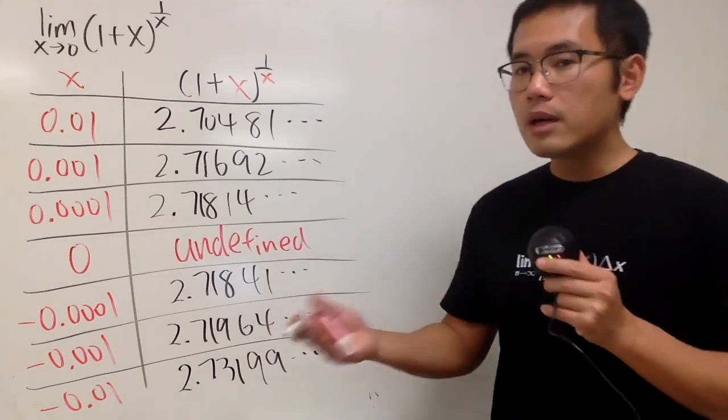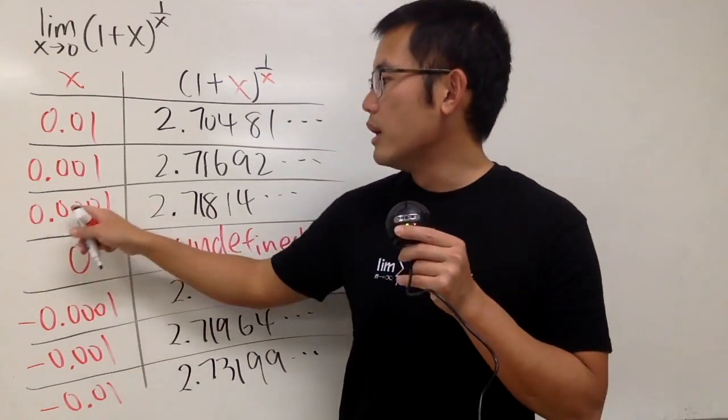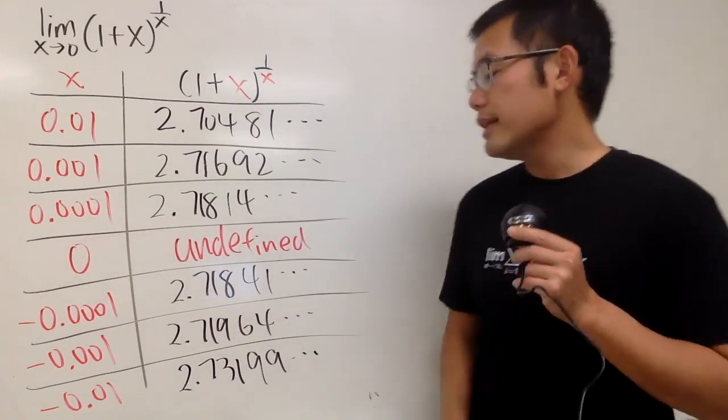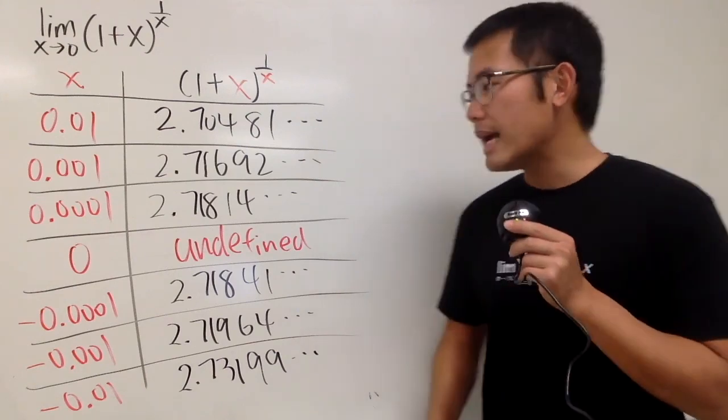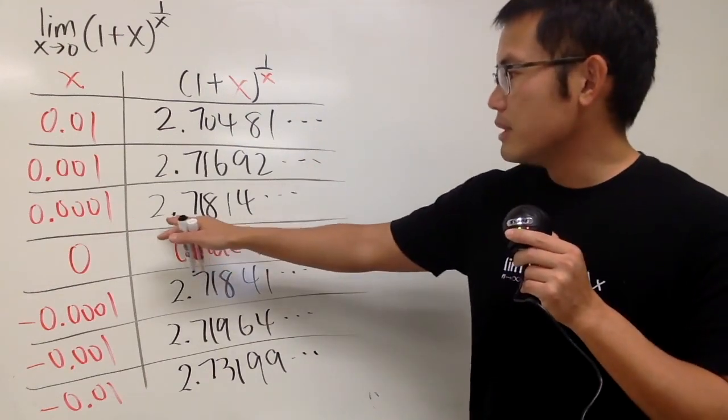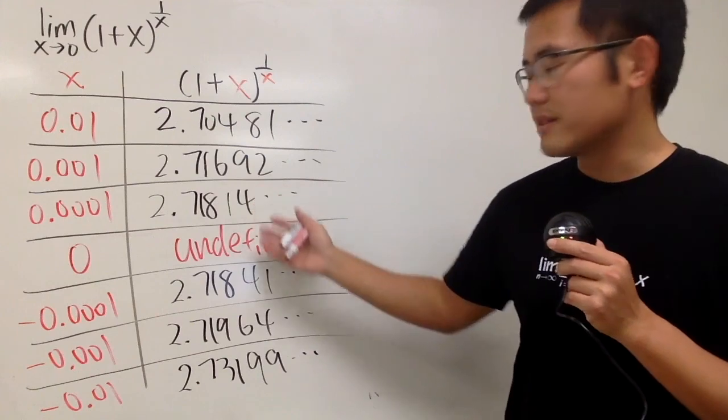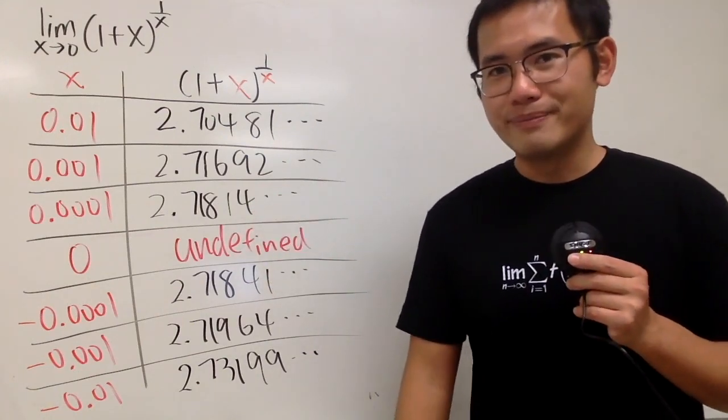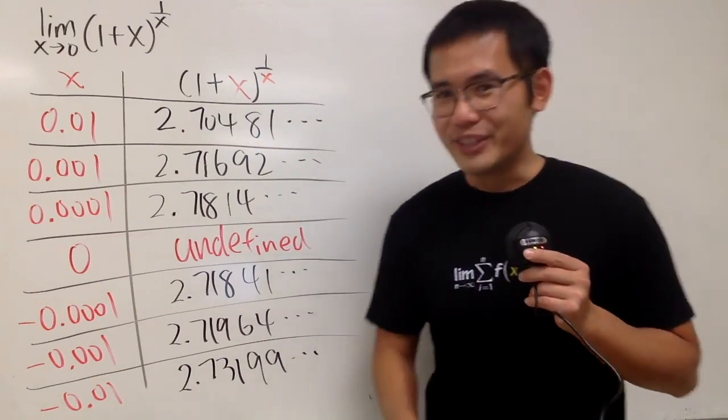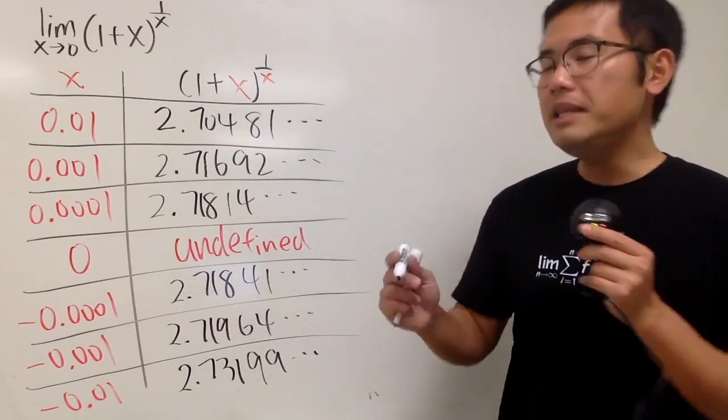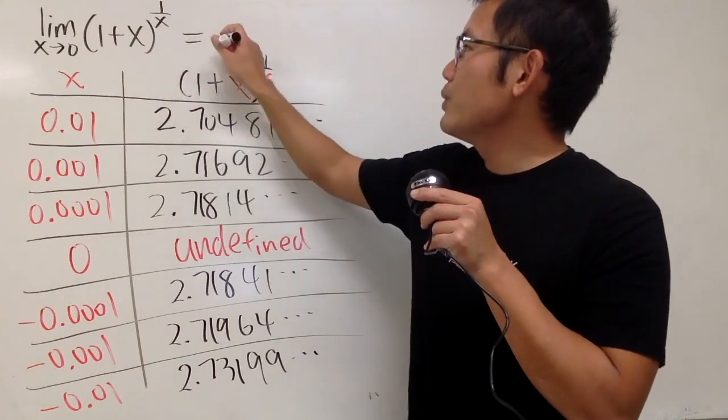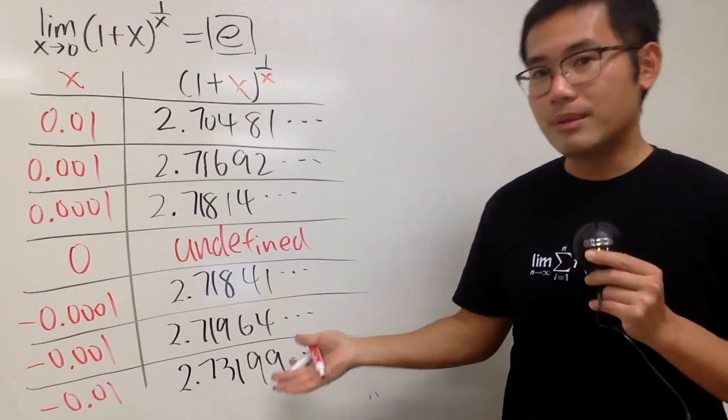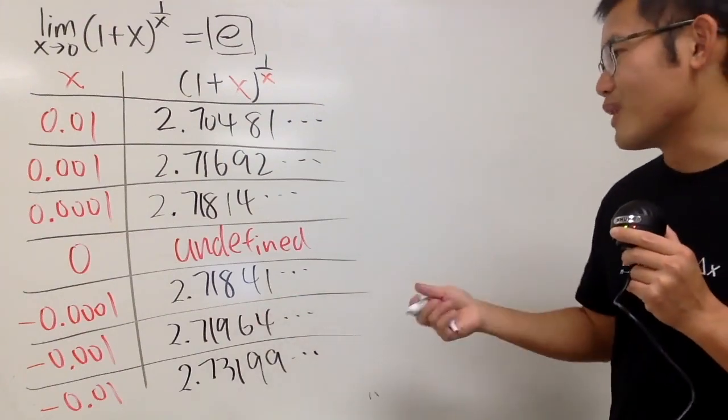And notice that this value is approximately 2.718. 2.718. What does that remind you of? Do we recognize this number? Yes, we should. That's the famous number, e. So in fact, the limit of this right here is equal to the famous number, e. And that's how you can just use the table values to see that.